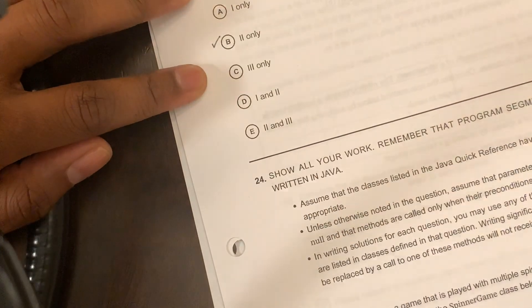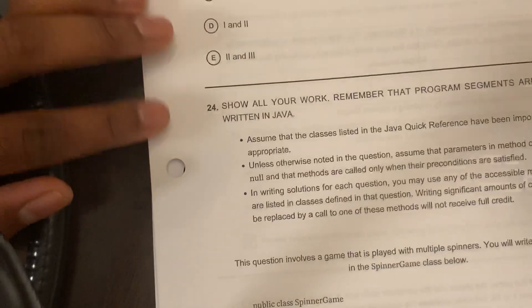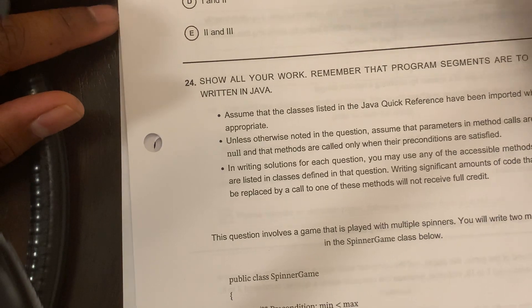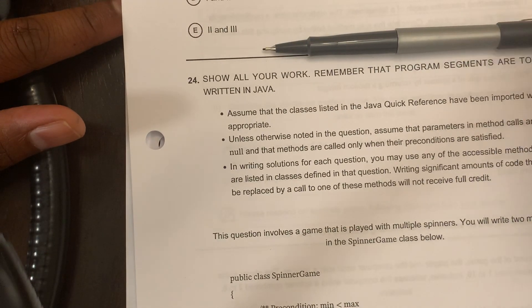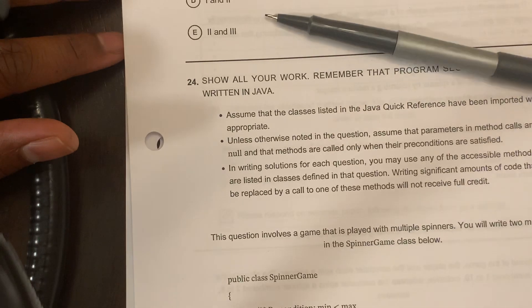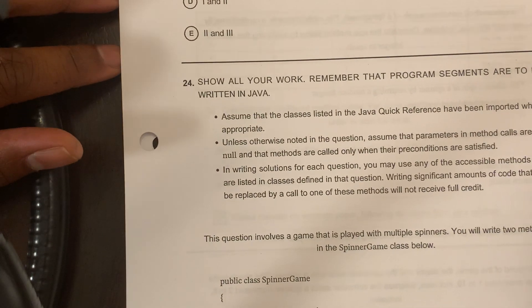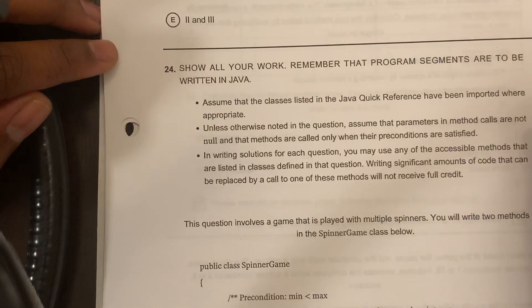Options 1 and 3 don't work, so B — option 2 — is the only proper answer. Numbers 24 and 25 are more ambitious free response questions. On the test, there's a simpler if/else free response problem. These use some conditions we haven't gone over yet, so we'll have simpler examples in class.